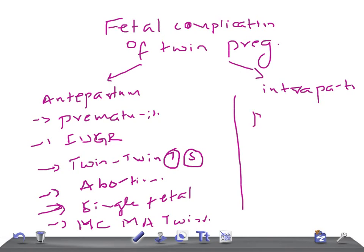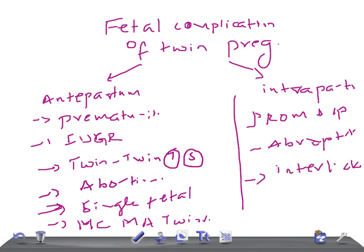During the intrapartum period, complications include premature rupture of membranes, cord collapse, abruption in the second twin, and extremely rarely, interlocking of the twins.